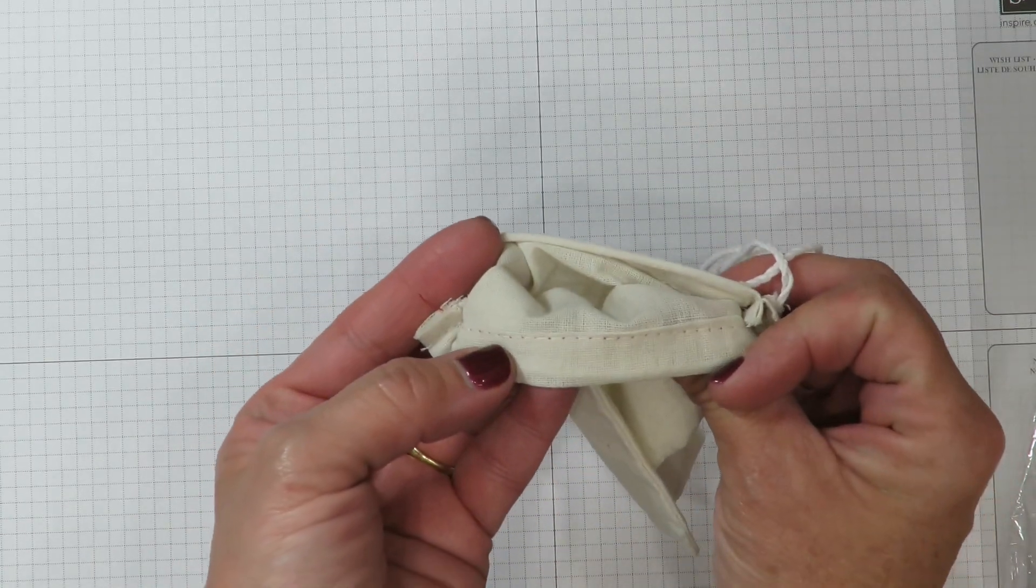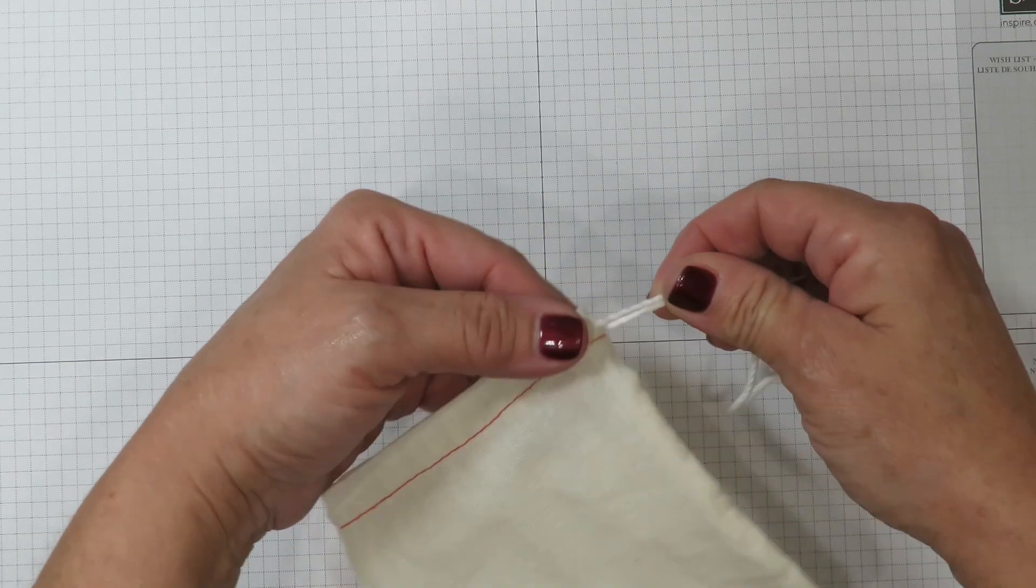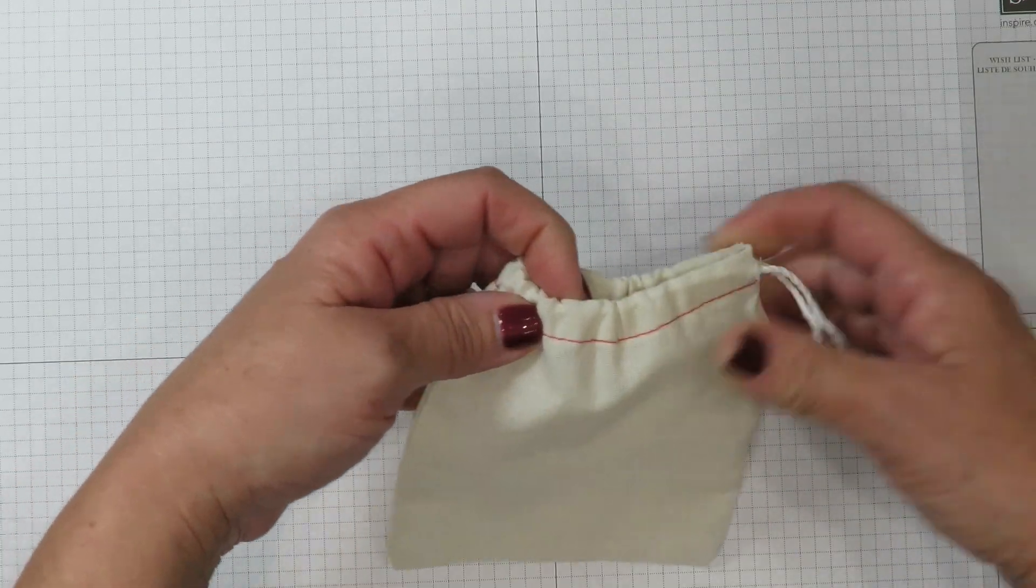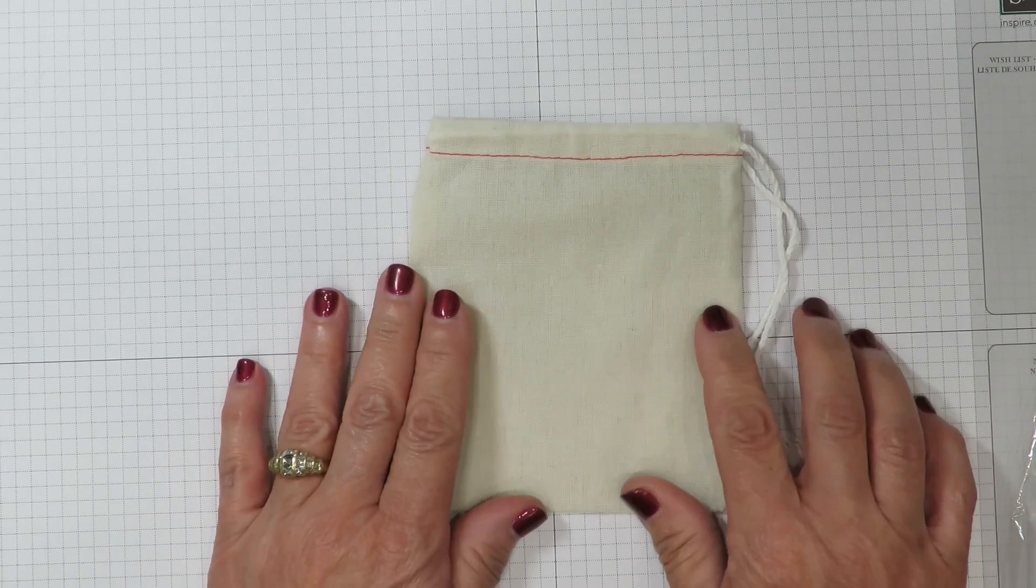There is a really nice turned over hem seam and you're going to find that this drawstring works really well. I've had no trouble with them coming undone once I cinch them.